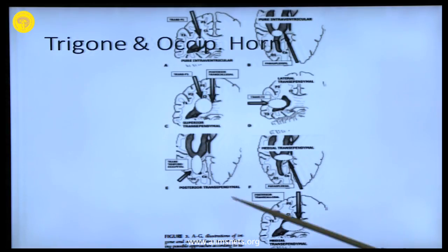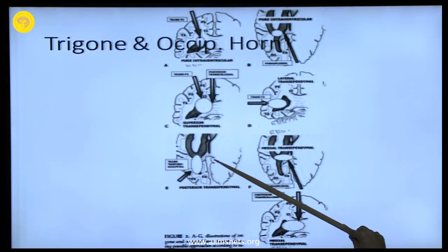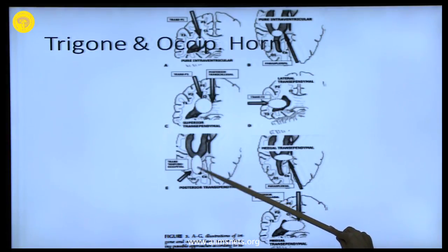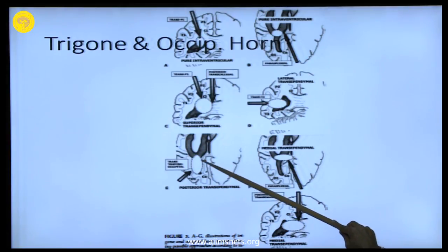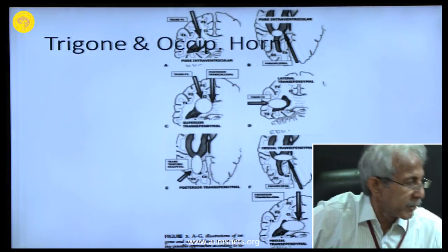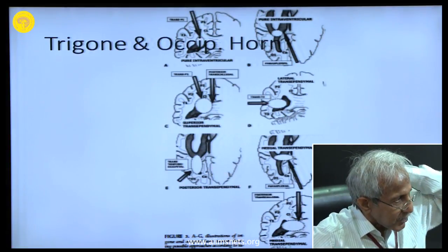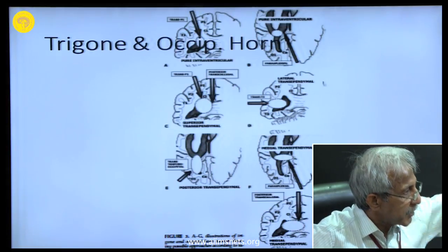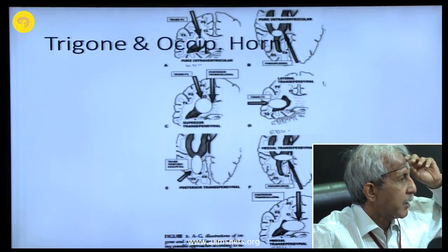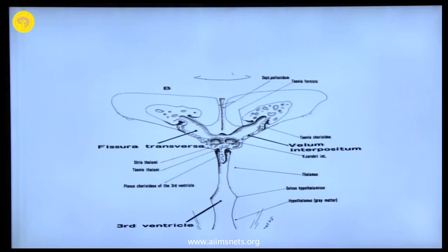For approaching the posterior part, sometimes your lesions are in the medial part of the occipital lobe. The posterior interhemispheric approach is occasionally used for this. The advantage of the occipital lobe is there are hardly any bridging veins there, which makes your job easier.